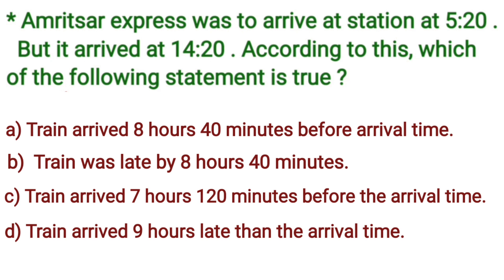So, let's see. Is it option A, train arrived 8 hours 40 minutes before arrival time? No. Option B, train was late by 8 hours 40 minutes? No. Option C, train was before by 7 hours 120 minutes? Again, no. Now, option D, train arrived 9 hours later than the arrival time. Yes. So, let's put a tick here.